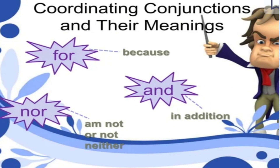The FANBOYS coordinating conjunctions are: For, And, Nor, But, Or, Yet, So. 'For' means 'because' and is usually only used to join two sentences together. 'And' is used for adding similar information or ideas — it means 'in addition.' 'Nor' is used for two non-contrasting, grammatically negative items — 'not plus not.'